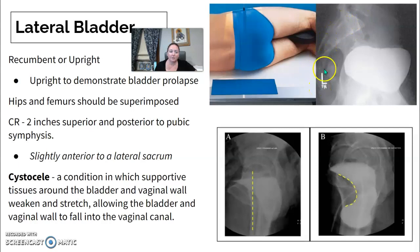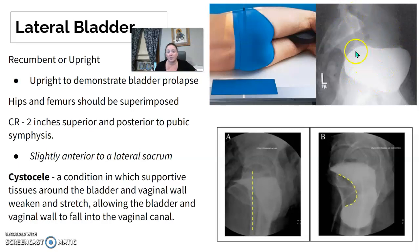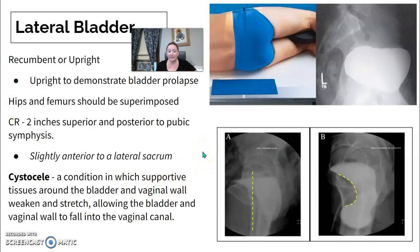If you know how to do a lateral sacrum/coccyx, just think anterior — your bladder is anterior to your L5-S1, just coming a little bit lower. You might see the term cystocele, where the supportive tissues around the bladder and vaginal wall have weakened and stretched, allowing some of the bladder to fall through into the vaginal canal.